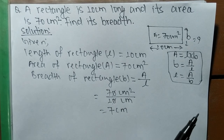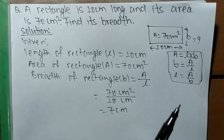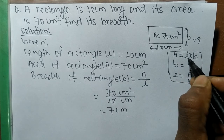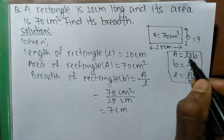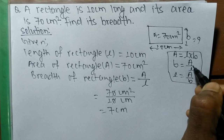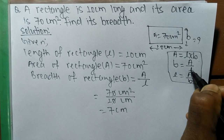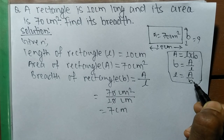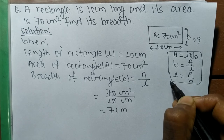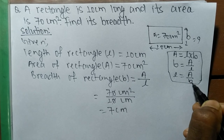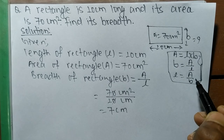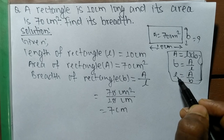In this way we can solve a problem related to a rectangle where area and either length or breadth are given. When you have to find area, area equals length times breadth. When you have to find breadth, B equals A divided by L. When area and breadth are given and you need length, length equals area divided by breadth. These three are the basic formulas to find area, breadth, and length of a rectangle.